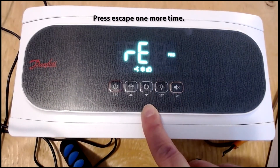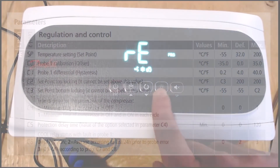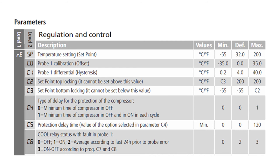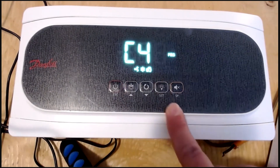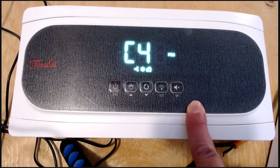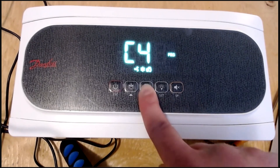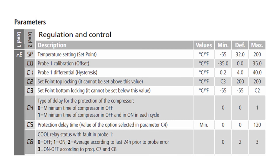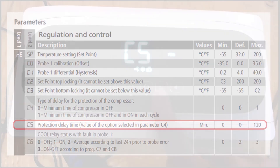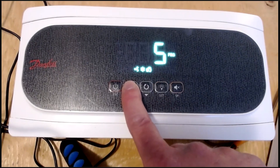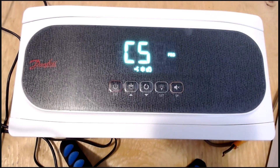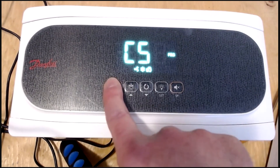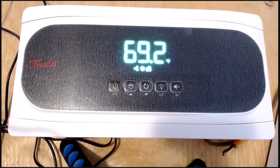Finally, to set the minimum off and on time for the compressors, we will need to scroll back to RE and hit set. From there, we will scroll to C4, hit set, and then select one so that we apply the next values to both the minimum off and on runtime of the compressor. Once we've done that, we scroll to the actual value itself, C5. Hit set and since we selected 10 minutes, we need to scroll to 10 and hit set. Once we've done that, hit escape twice and we go back to the temperature control menu.